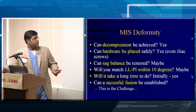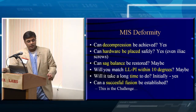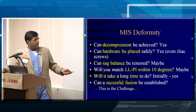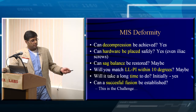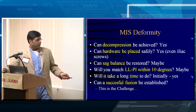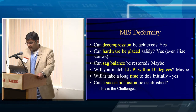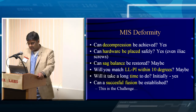For MIS deformity, you have to ask: Can you decompress these patients? Can you place hardware? Can you correct sagittal balance? Will you match lumbar lordosis to pelvic incidence within 10 degrees? And critically — is it going to take a long time, and are you going to get a pseudoarthrosis? If I didn't do an interbody at every level, I ended up getting pseudos, because with such a small incision and limited view of the facet joint, a 65-year-old is not reliably getting a fusion.